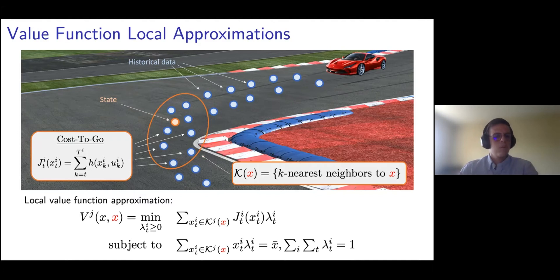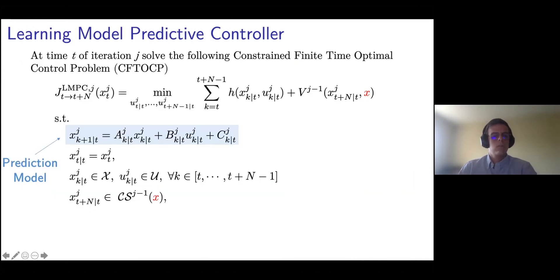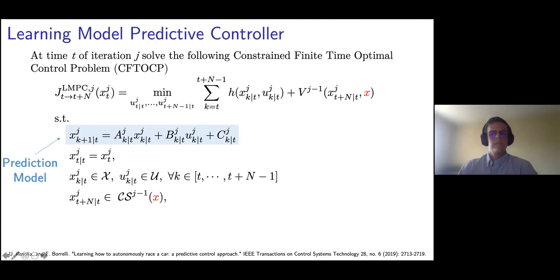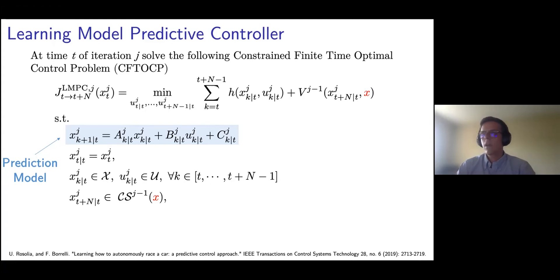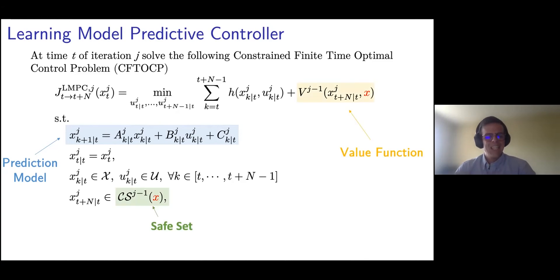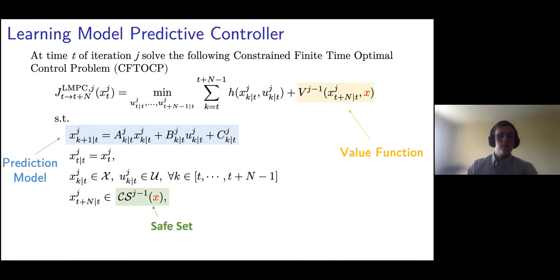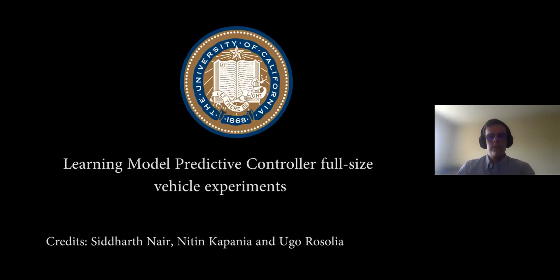The last component we need is a prediction model. To estimate it, we use nonparametric estimation — the details are in the paper and I'm happy to discuss them offline. In the first part of this presentation, we have discussed that we can iteratively synthesize predictive control policies by estimating a prediction model, a safe set, and a value function. Now let's see how the strategy works on our experimental platform.